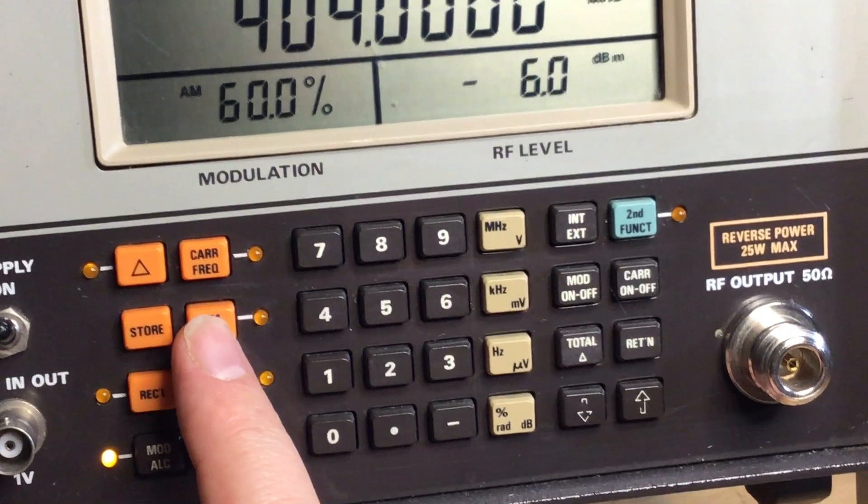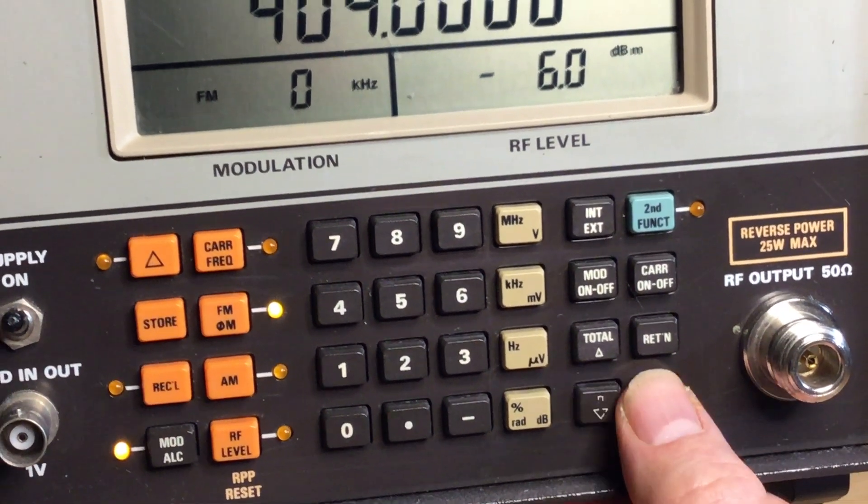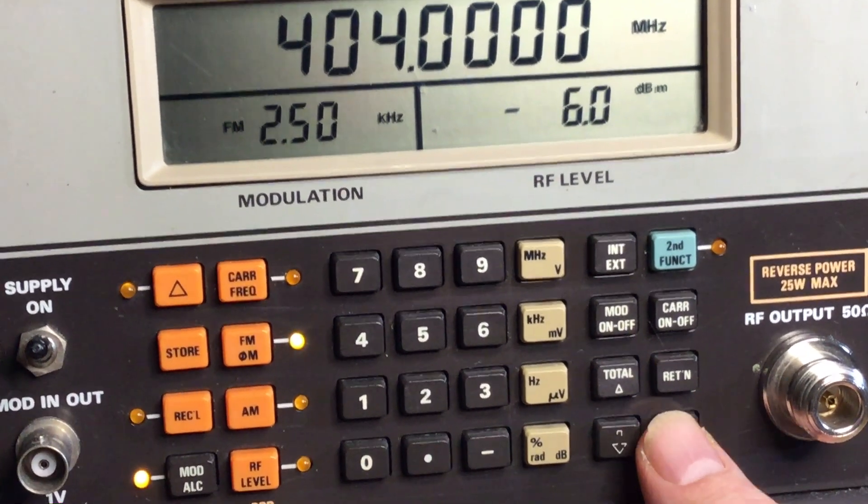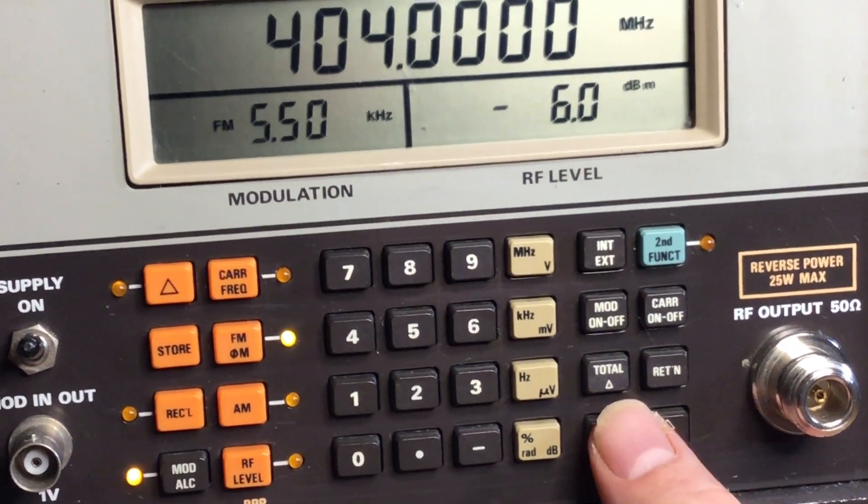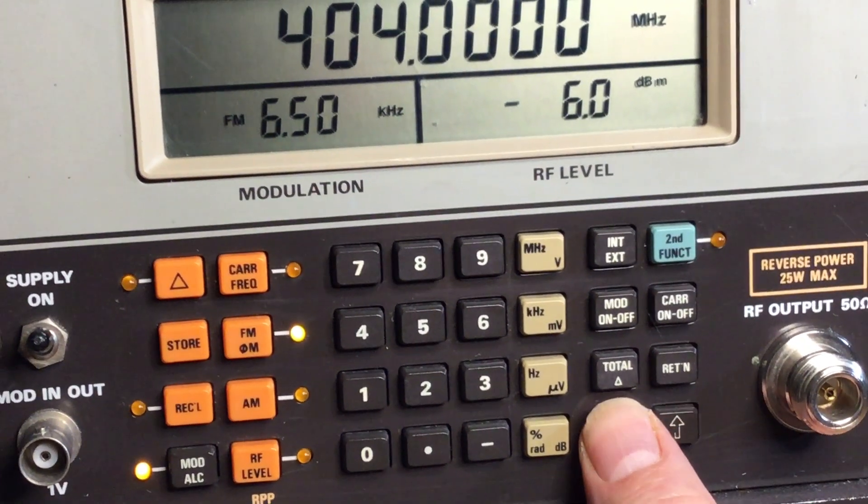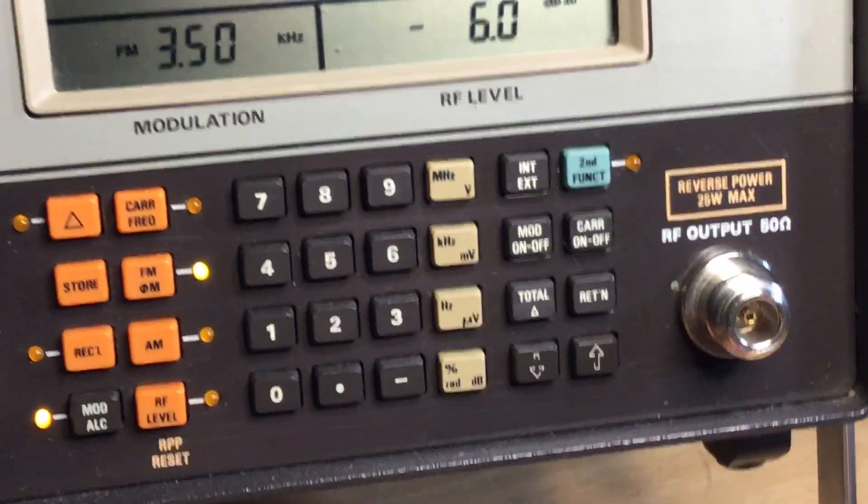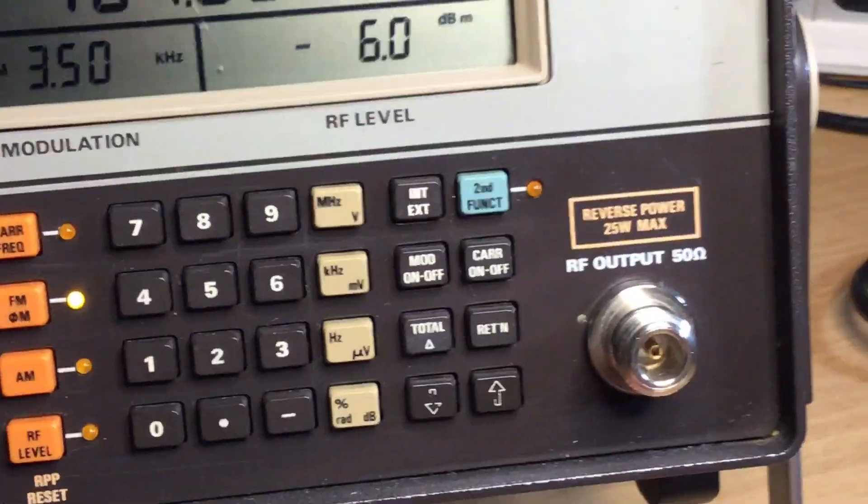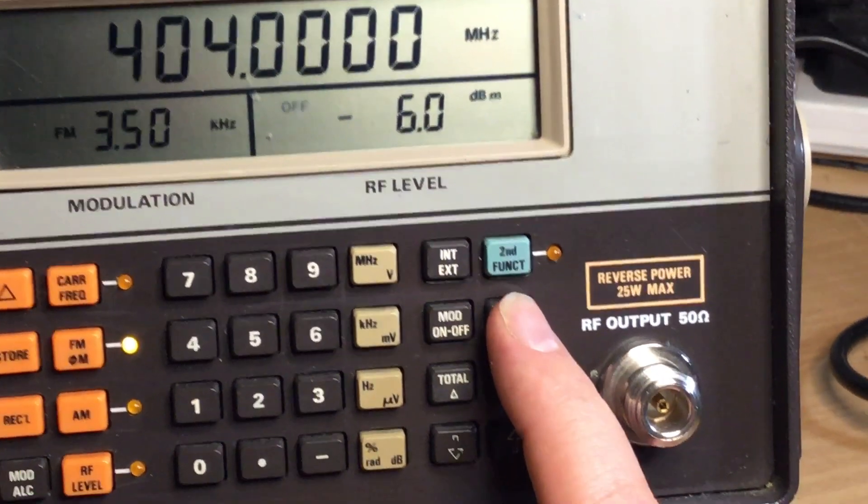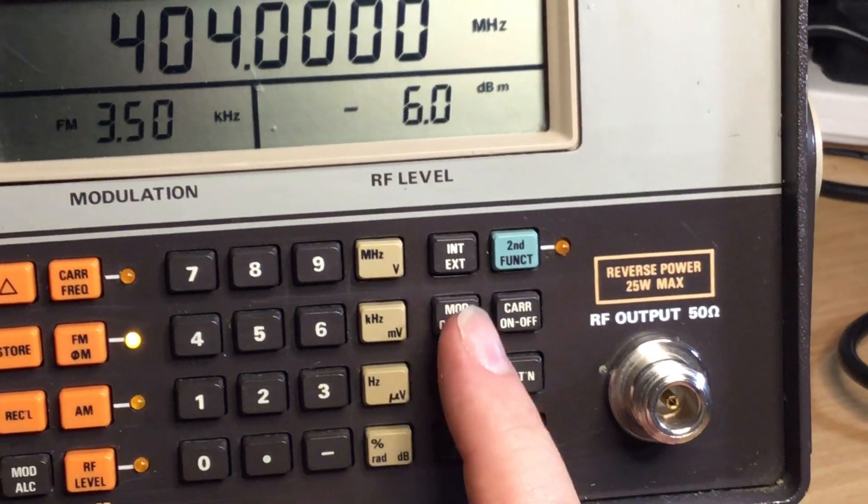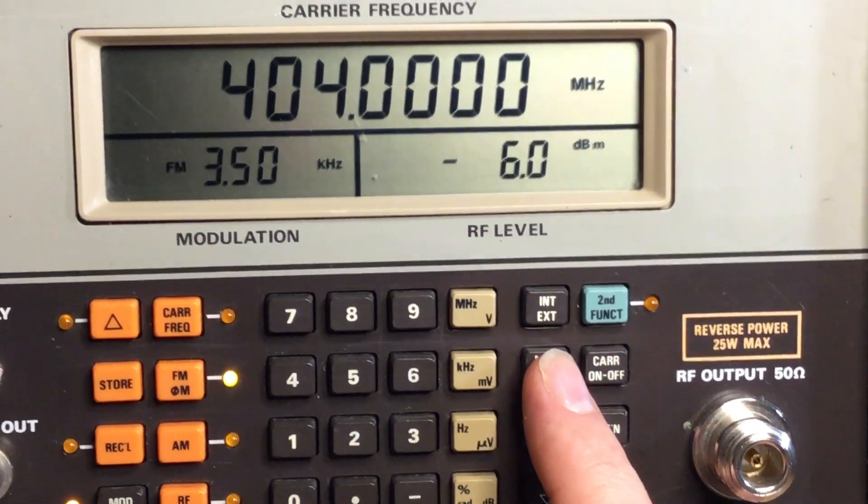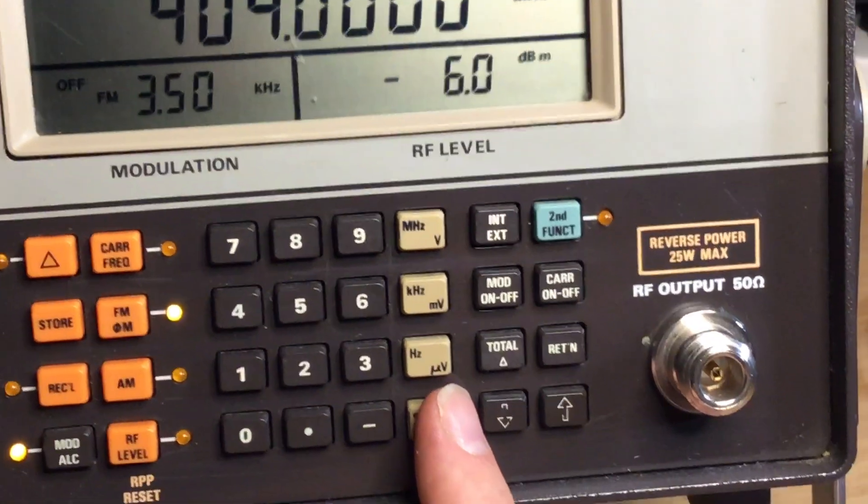You can do quite a bit with it. Just go back to the FM side, I think you can open down the FM mod as well using the up and down by setting up the increments. We've also got things like, for example, carrier on and off. We can switch the carrier on and off, mod on and off as well.